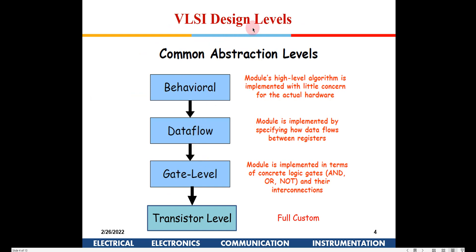There are various design levels. At the transistor level, which is full custom, you decide how transistors are interconnected — done in an EDA tool like Cadence. Gate level modeling is what we did last time. Today we see data flow modeling, which is slightly higher level where you don't specify gates — you let the compiler decide. You can go one level further up and define the behavior of the circuit.